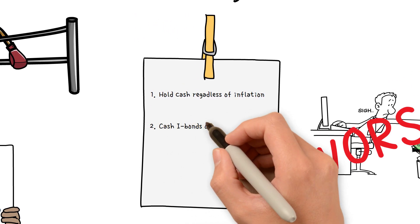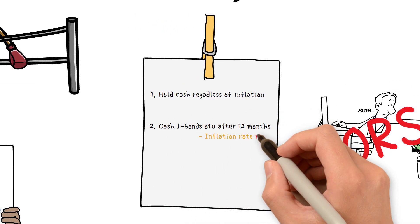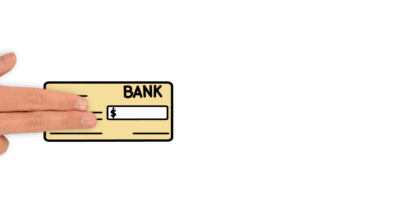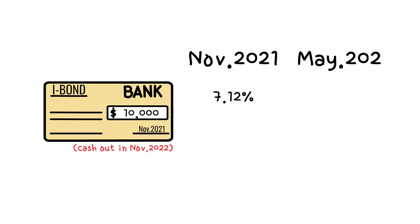Number 2: If you cash out your I bonds 12 months later in an environment where inflation rate is rising. Assume you purchased $10,000 in I bonds in November 2021 and cashed them out in November of this year. In November 2021, the interest rate on I bonds was 7.12%, and in May 2022, it was 9.62%.